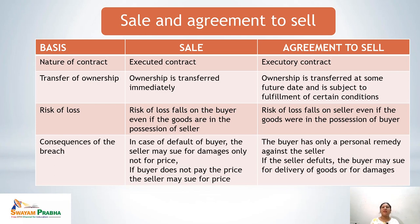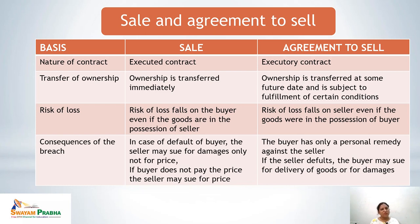Now let's see the difference between sale and agreement to sell. On the basis of nature of contract, a sale is an executed contract whereas an agreement to sell is an executory contract. In a sale, everything is performed and nothing is left on the part of either party. In an agreement to sell, the contract is yet to be performed by one or both parties, which is why it is called an executory contract.